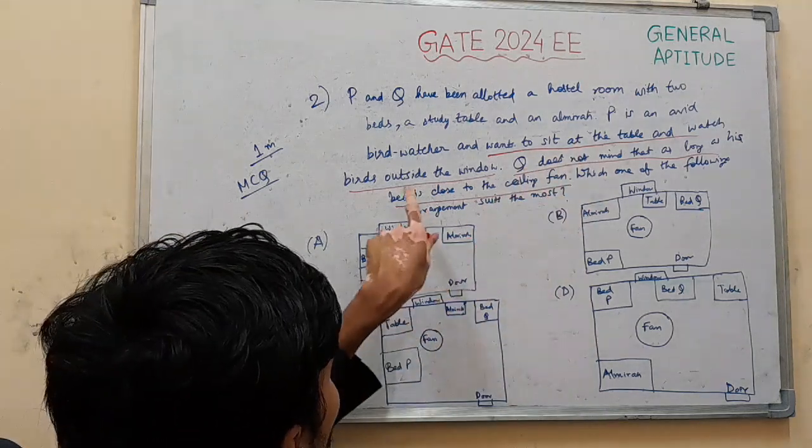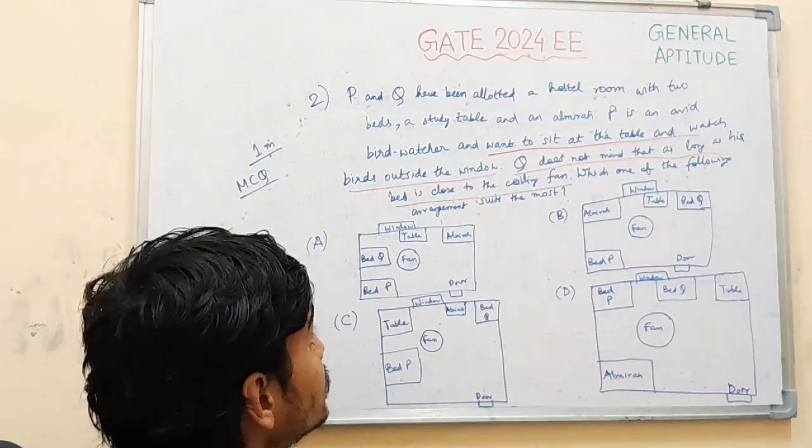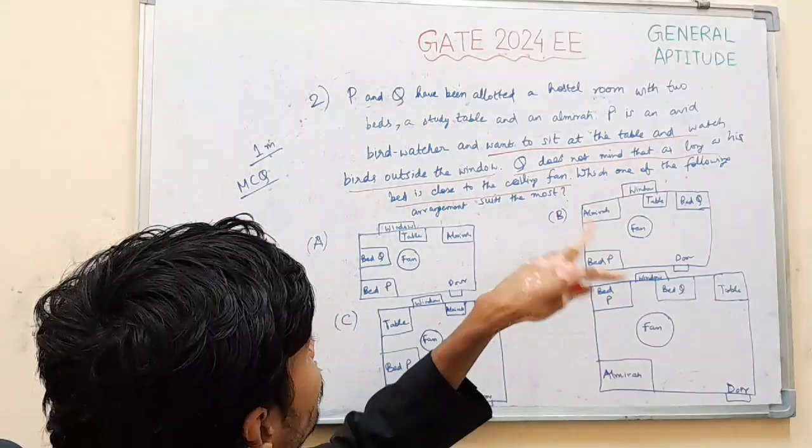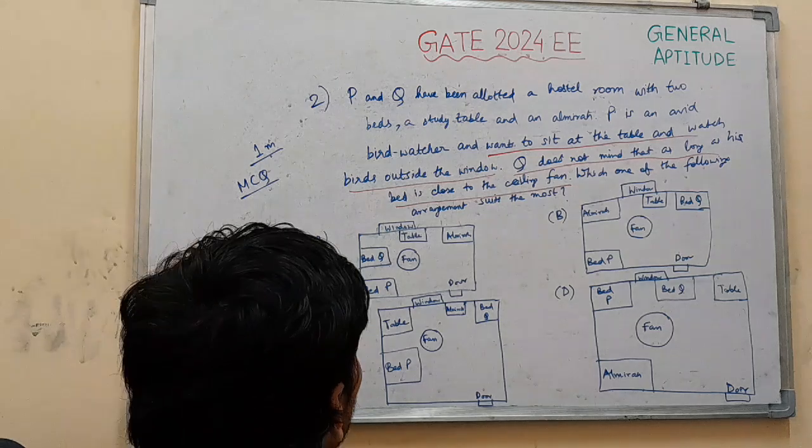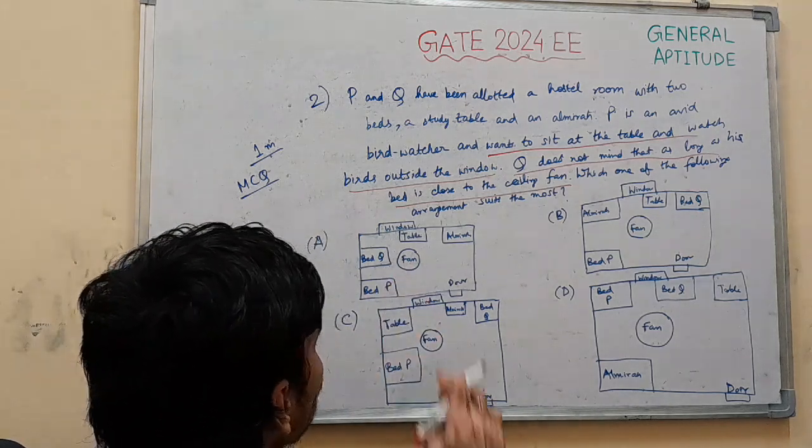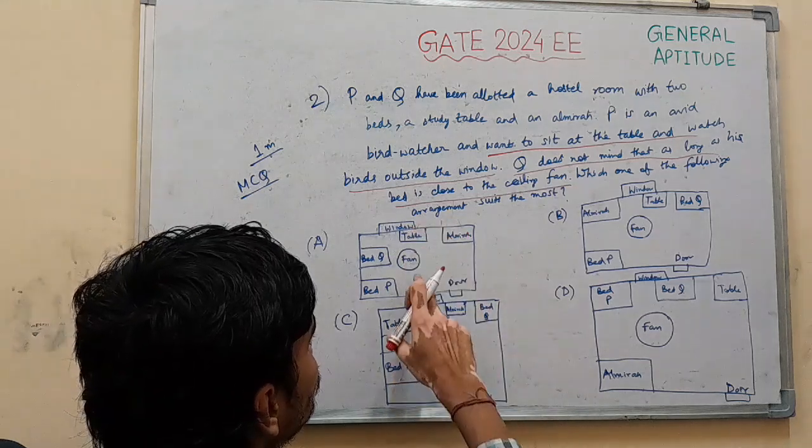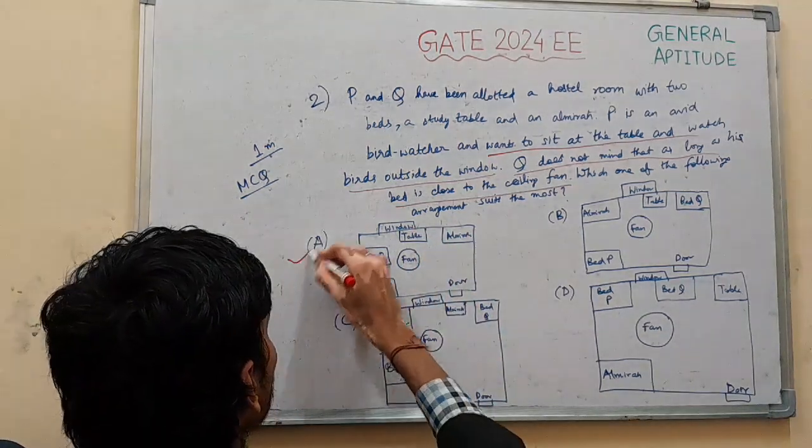P: table, bed and birds, table and window. Q: bed of Q is close to the ceiling. Here you can see bed is close to the ceiling. And also table is close to the window and P can watch birds. So option A is satisfied.